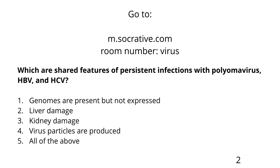The next question: which are shared features of persistent infections with polyoma, HBV, and HCV? Genomes are present but not expressed; liver damage; kidney damage; virus particles are produced; or all of the above? The answer is D — virus particles are produced. That is the one feature in common with polyoma, hepatitis B, and hepatitis C. All of these infections are associated with virus production, so the genome has to be expressed. Liver damage is just hepatitis B and C, not polyoma.